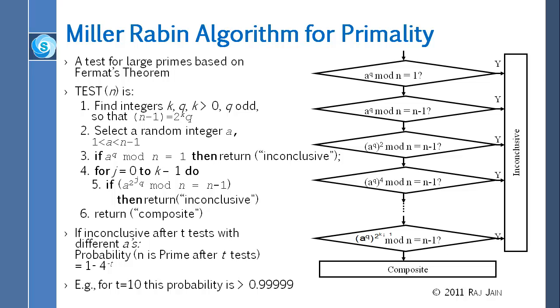The test goes as follows. You take any random number a, raise to q mod n, and then calculate, is it one? If it is one, then you stop right there, inconclusive. Take another a. If it is not one, then is it n minus one? If it is n minus one, then inconclusive. If it is not n minus one, then you square it. Is that n minus one? Yes, inconclusive. If it is not, then you square again. You keep doing this, all the way to 2 raised to k minus 1. And if that is n minus one, then inconclusive, otherwise it is a composite.